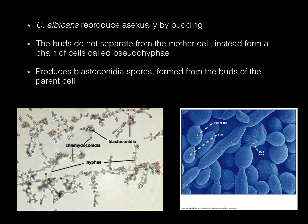Candida albicans reproduces asexually by budding. The buds do not separate from the mother cell; instead they form a chain of cells called pseudohyphae. Candida albicans produces blastoconidia spores formed from the buds of the parent cell.